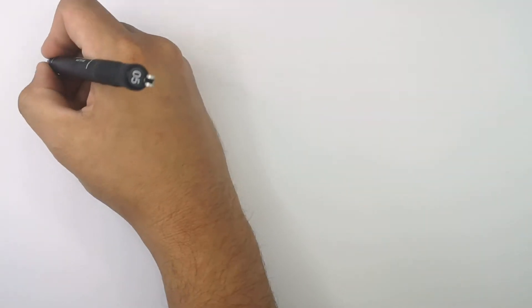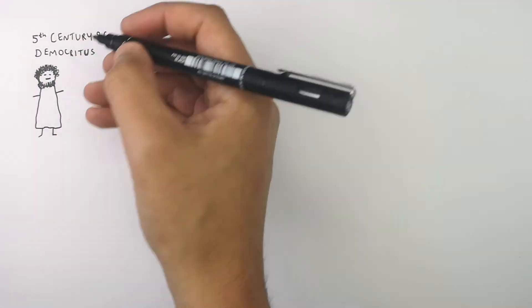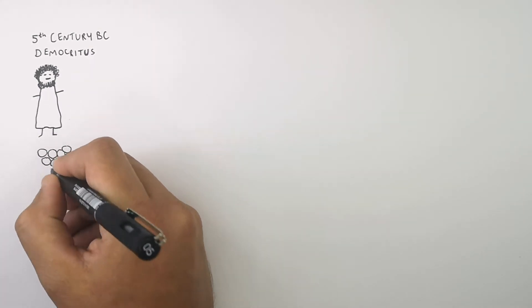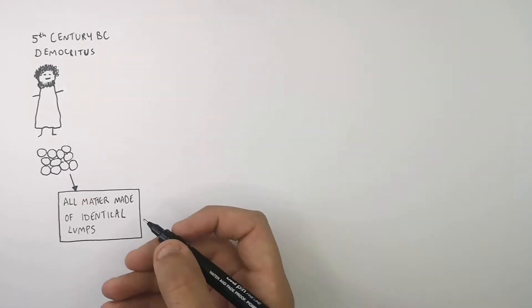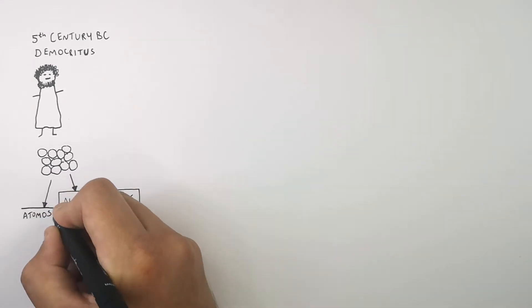This here is a Greek scientist called Democritus. In the 5th century BC, this Greek scientist stated that all matter was made of lumps, and all of these lumps were called atomos.